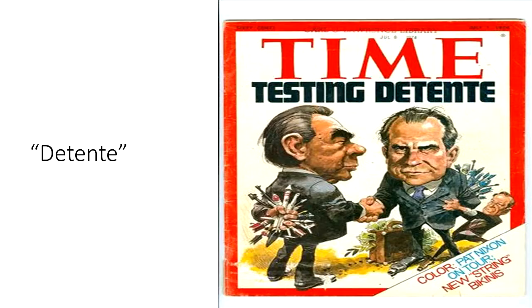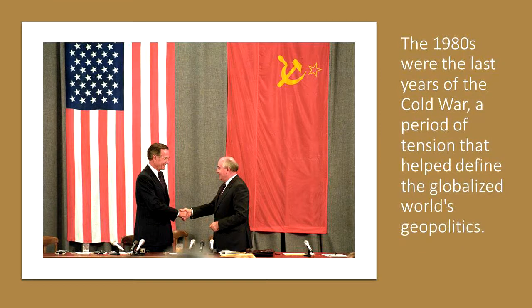In the late 1960s and 1970s, the United States and the Soviet Union pursued a relaxation of Cold War tensions that became known as détente, because there were no direct confrontations between the two countries. This changed in the 1980s with the Soviet invasion of Afghanistan and the presidency of Ronald Reagan, who was determined to confront the Eastern Bloc. The 1980s were the last years of the Cold War, a period of tension that helped define the globalized world's geopolitics.